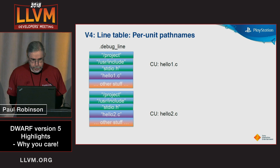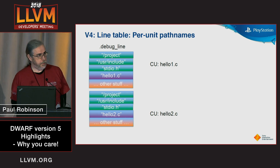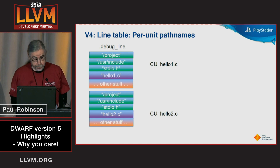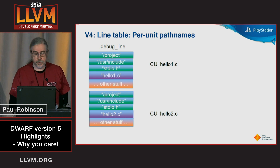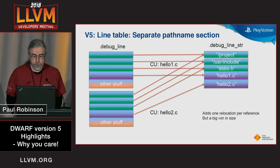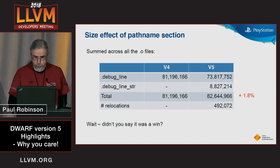In the line table, every compilation unit has a long list of the directories and files that are used by that compilation. These are strings embedded directly into the line table, and all the green stuff is replicated in every compilation unit for builds when you have lots of files in the same project. So we can factor those out into their own string section and save a lot of space. This introduces some relocations, but the space savings is definitely worth it.